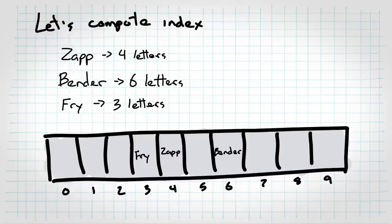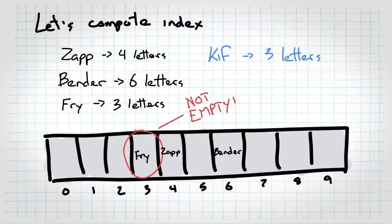But there's some obvious problems here. Like, what happens when I try to insert kif? Well, that has three letters, and that spot is already taken by fry. So we need to figure out how to work around this.